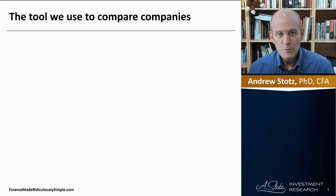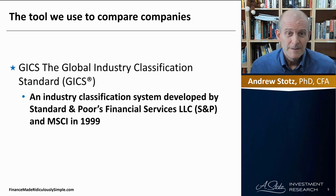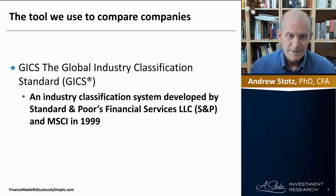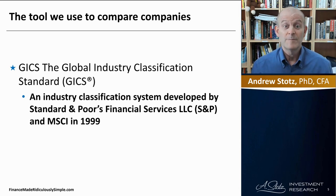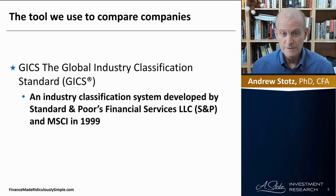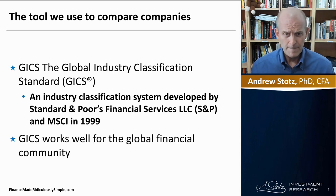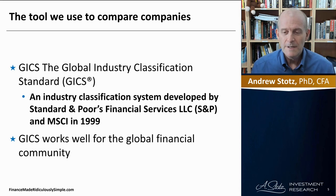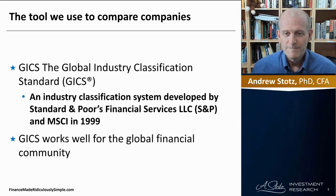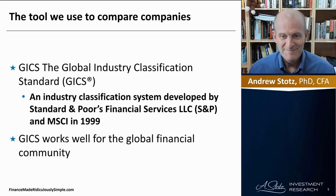The tool we use to compare companies is the GICS classification. It's an industry classification developed by S&P Financial Services and MSCI. GICS works well for the global financial community — I've been using this classification for a long, long time.